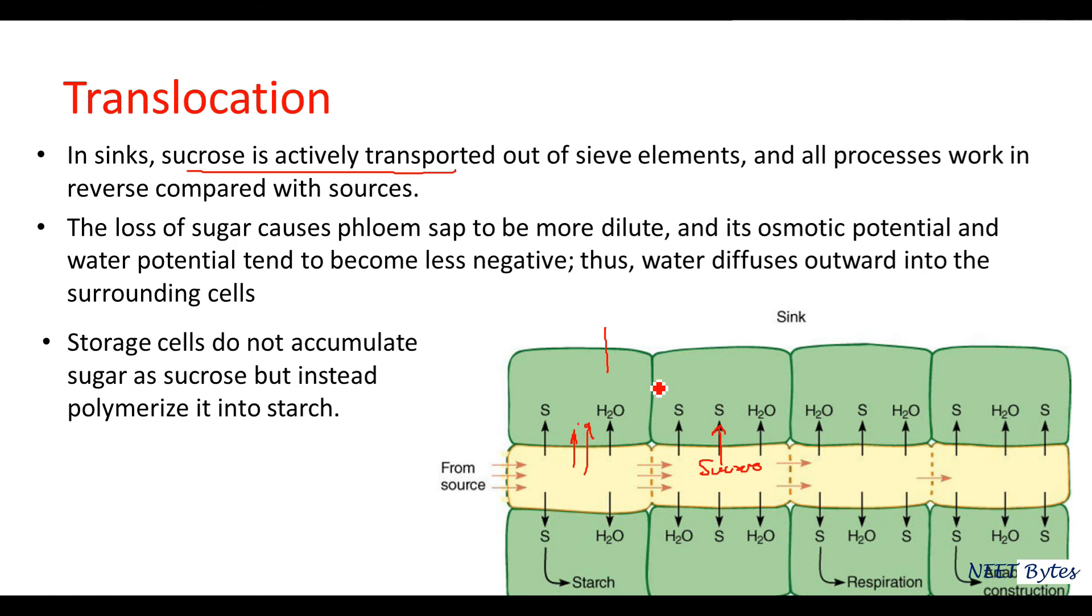What is the advantage of storing in the form of starch? Once stored as starch, a constant osmotic pressure is maintained within this cell. Every time sucrose is coming, so unless and until this sucrose is converted into starch, the potential will keep increasing. Some sort of trapping mechanism is required to maintain constant sucrose so water should keep coming to the requisite level only. Whatever sucrose is coming is eventually converted into starch within the sink.